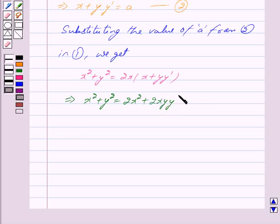This further implies y² is equal to 2x² - x² which gives x² + 2xyy'.